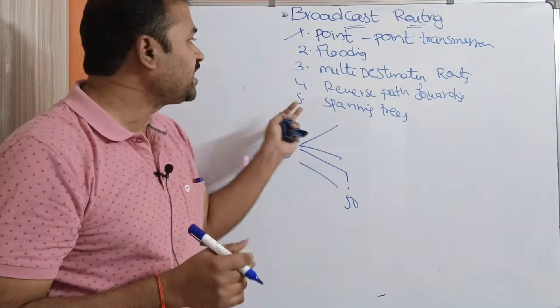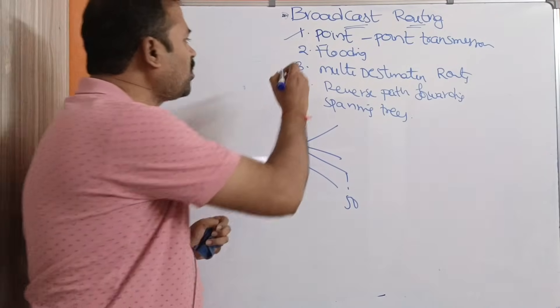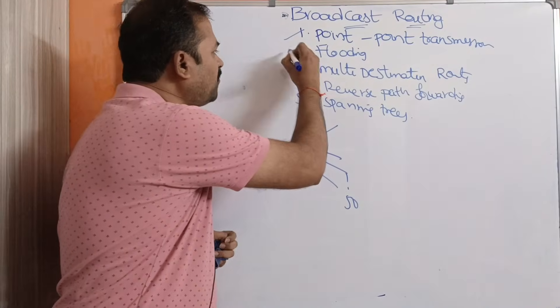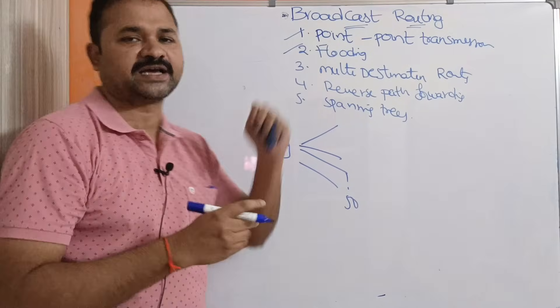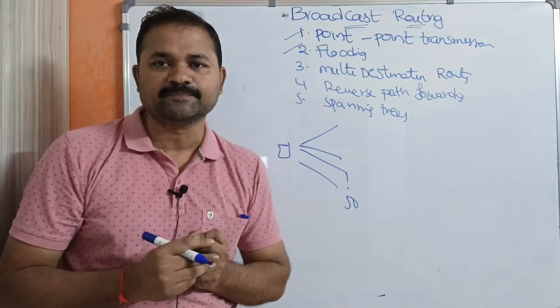The major disadvantage of this approach is the source router has to remember all 50 destination router addresses, and more bandwidth is needed to store all those addresses. We can overcome this problem with the help of the second method, that is flooding.